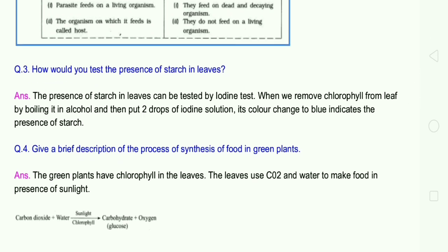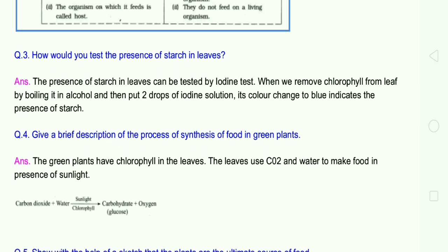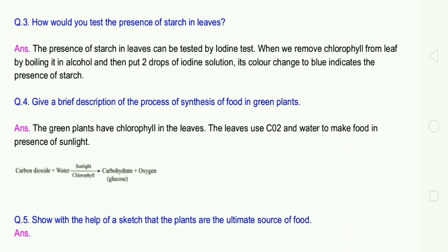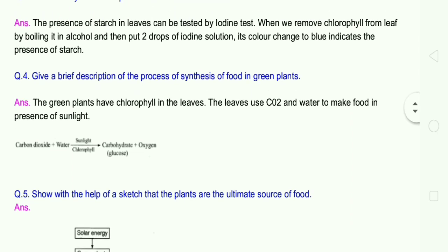Question 4: Give a brief description of the process of synthesis of food in green plants. Where do you prepare food in green plants? Green plants have chlorophyll in leaves. The leaves use carbon dioxide and water to make food in presence of sunlight. Carbon dioxide plus water in the presence of sunlight and chlorophyll gives carbohydrate plus oxygen.